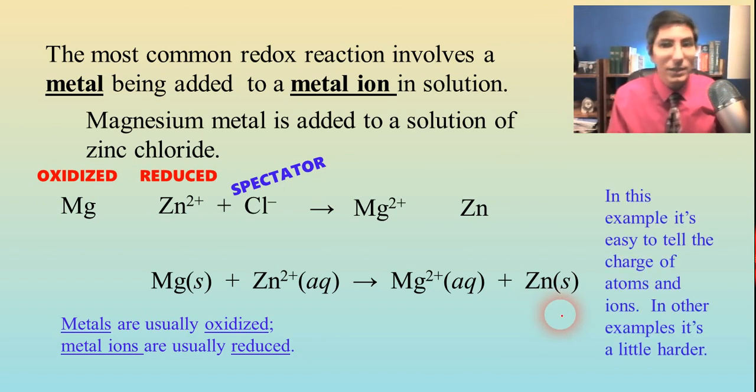Now in this example that we just did, it's usually pretty easy to tell the charge of the atoms and ions here. We know just by looking that that is a plus 2, because it says so. And that's a minus 1, because it says so. And that's a plus 2, because it just comes right out and says so.